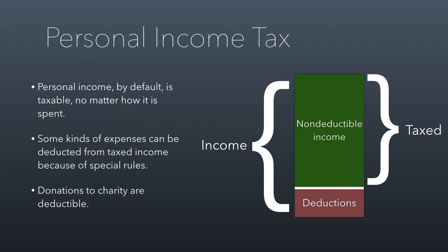Let's talk about charitable tax deductions and how they work financially. The way personal income taxes work is all of your income by default is taxable. If you found buried treasure in your backyard, you would have to pay an income tax on it. You'll notice this is different than with companies — they only get taxed on their profits, which is revenue minus expenses. Americans get taxed on all of their income, but you can make deductions, though they tend to be limited.